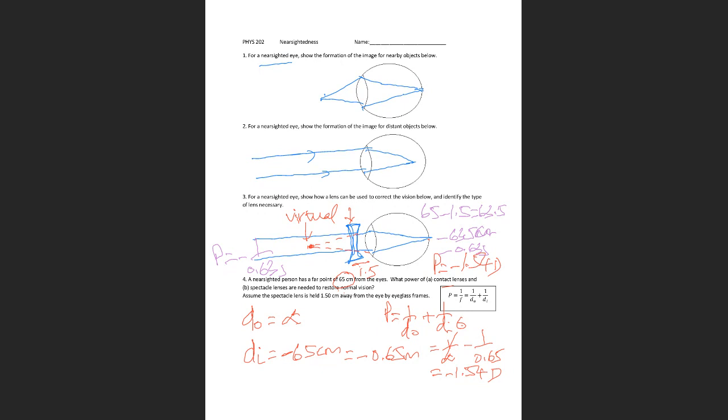If you do that, 1 divided by 0.635 will be negative 1.57. So the power for the spectacle lens is negative 1.57 diopters, and the one for the contact lens is negative 1.54.